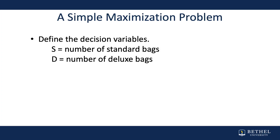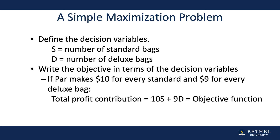As we put this mathematical model together, we'll use S to represent standard bags and D to represent deluxe bags. We write the objective in terms of the decision variables. Since Par makes $10 for every standard bag and $9 for every deluxe bag, our total profit contribution equation becomes 10 times S plus 9 times D — our objective function. So our objective is to maximize 10S + 9D.